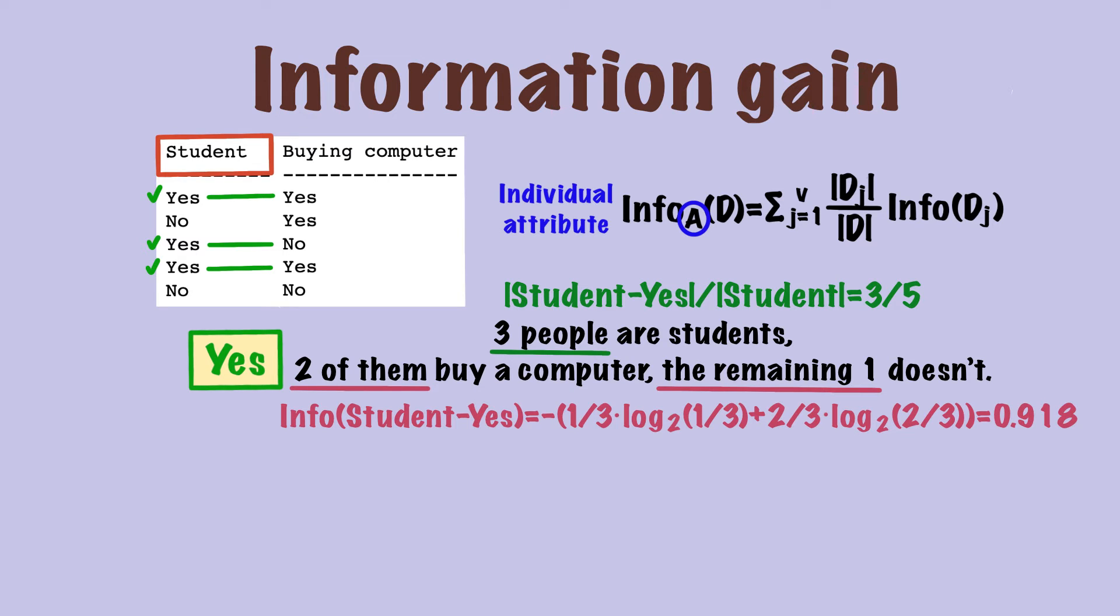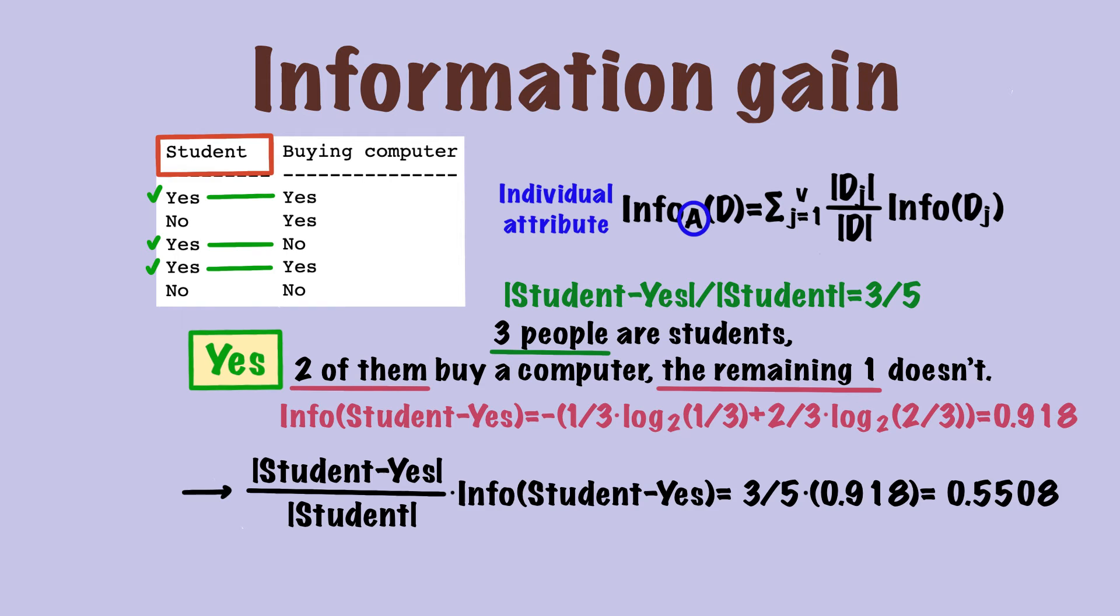The second part of the formula is the entropy of class dj, which is yes. When it comes to entropy, it always links to the target attribute. Similar to how we calculate the entropy for the whole database, we now look at the subset of the target attribute. That is, we only look at three data points and calculate its entropy, which is 0.918.